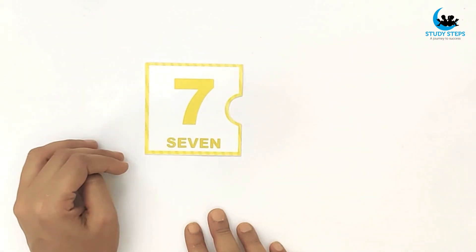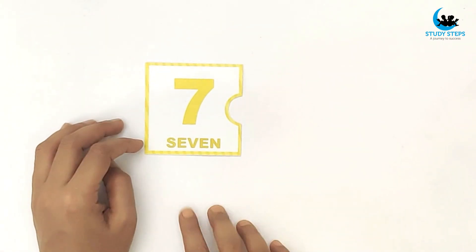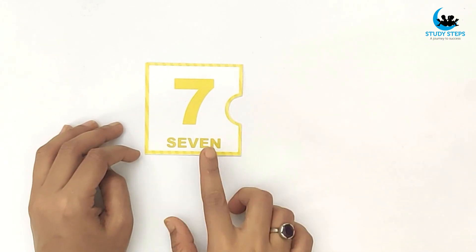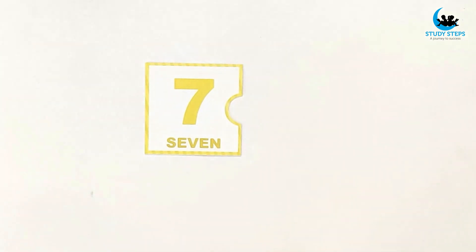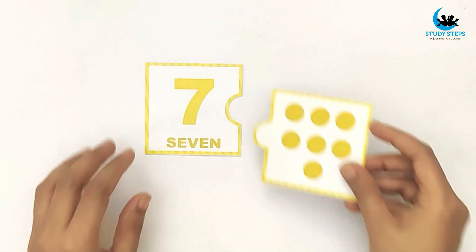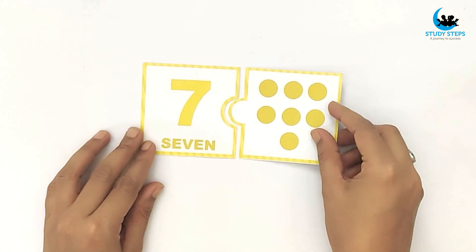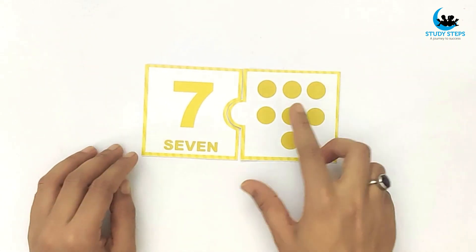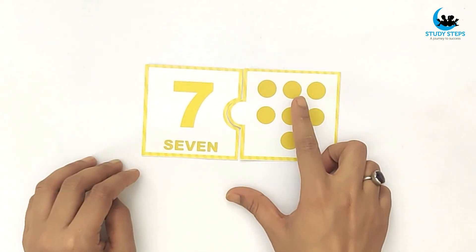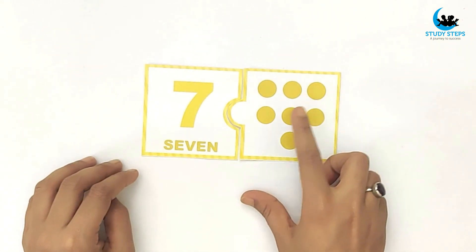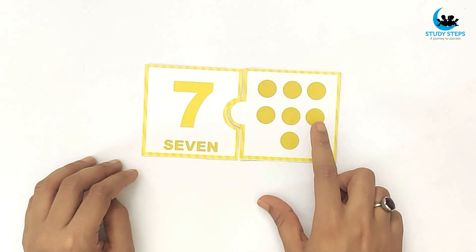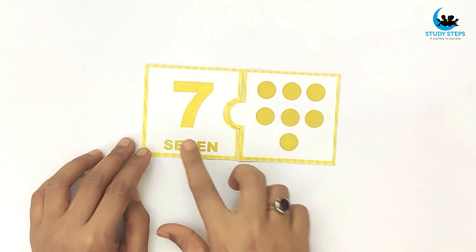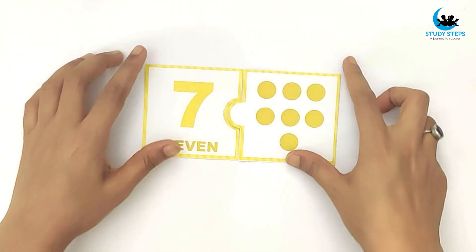Seven, S-E-V-E-N, seven. One, two, three, four, five, six, seven. Seven dots.